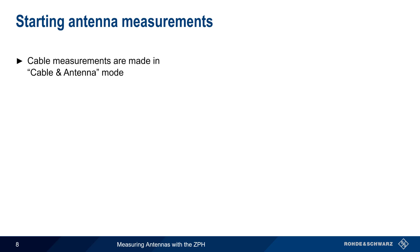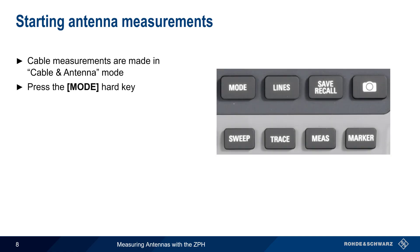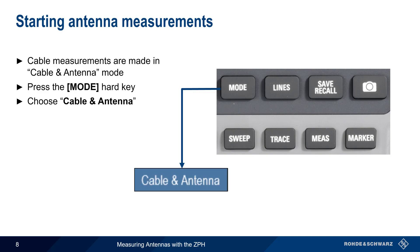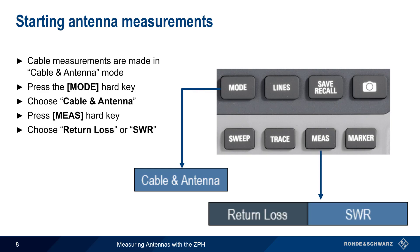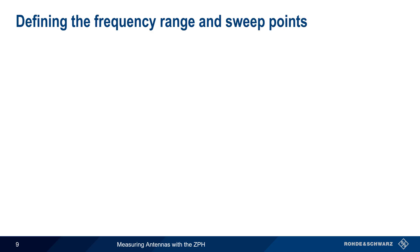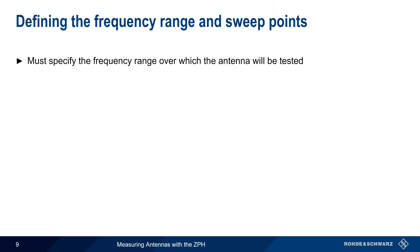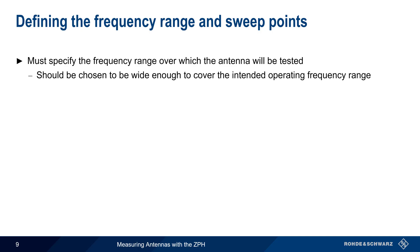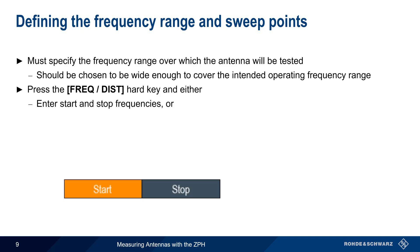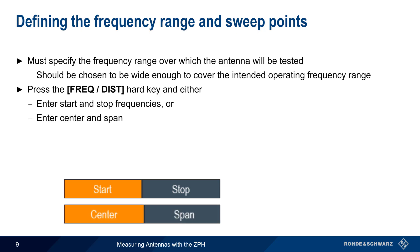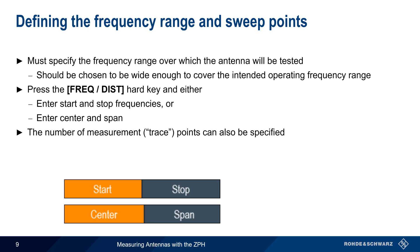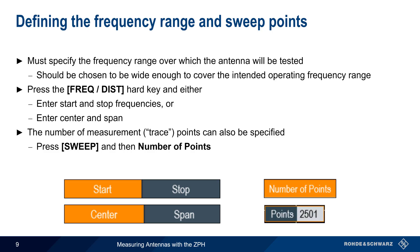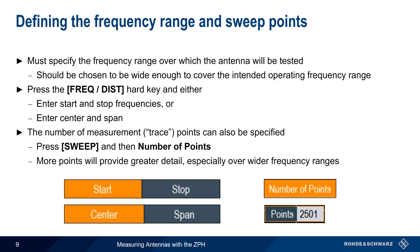On the ZPH, antenna measurements are made in Cable & Antenna mode. To enter this mode, press the Mode hard key on the front of the ZPH and then choose Cable & Antenna from the list of available on-screen options. Next, press the Measure hard key and select either Return Loss or SWR for performing antenna impedance measurements. We also need to specify the frequency range over which the antenna will be tested, which should cover the intended operating frequency range. To define the frequency range, press the Frequency Distance hard key and then enter the Start and Stop frequencies, or enter these as Center and Span instead. The number of measurement or trace points over the span can also be specified by pressing the Sweep hard key and choosing Number of Points. A greater number of points will provide greater detail, particularly over wide frequency ranges, but this will also increase measurement time.